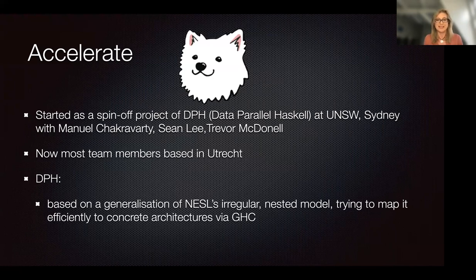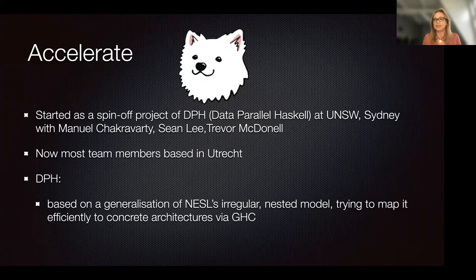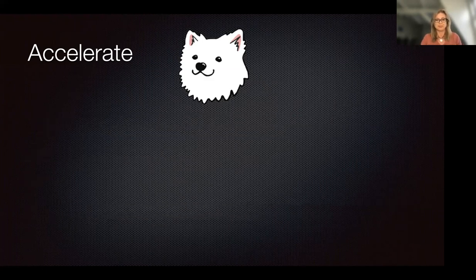With Data Parallel Haskell we started from a very ambitious idea: we took the nested data parallel programming model and generalized it further by trying to support even more data structures, integrating it into the Glasgow Haskell Compiler, and using GHC to map efficiently to concrete architectures. That was ambitious for two main reasons: it's a very powerful programming model, and it was a struggle to get GHC to do exactly what we wanted because it wasn't built for those optimizations.